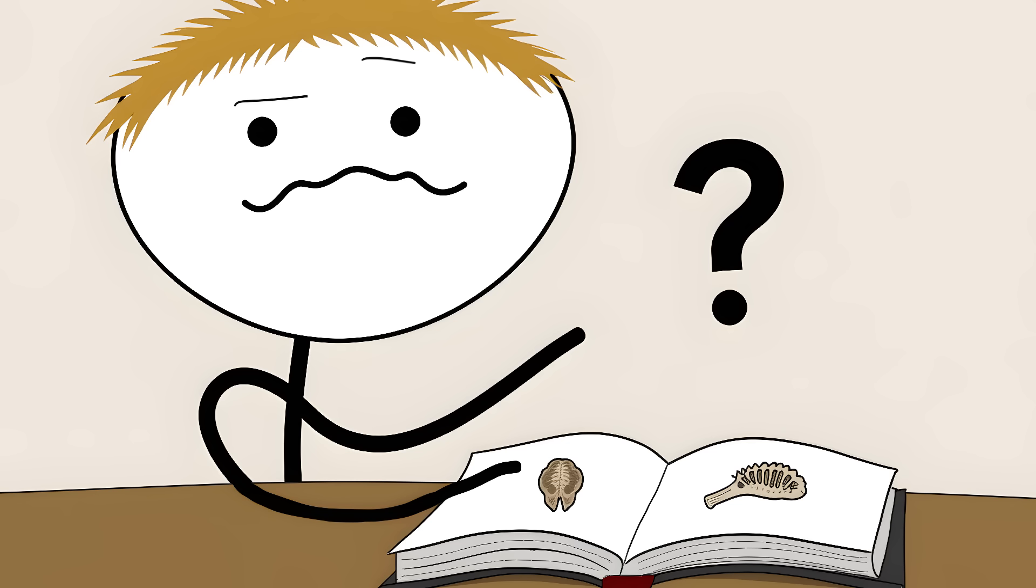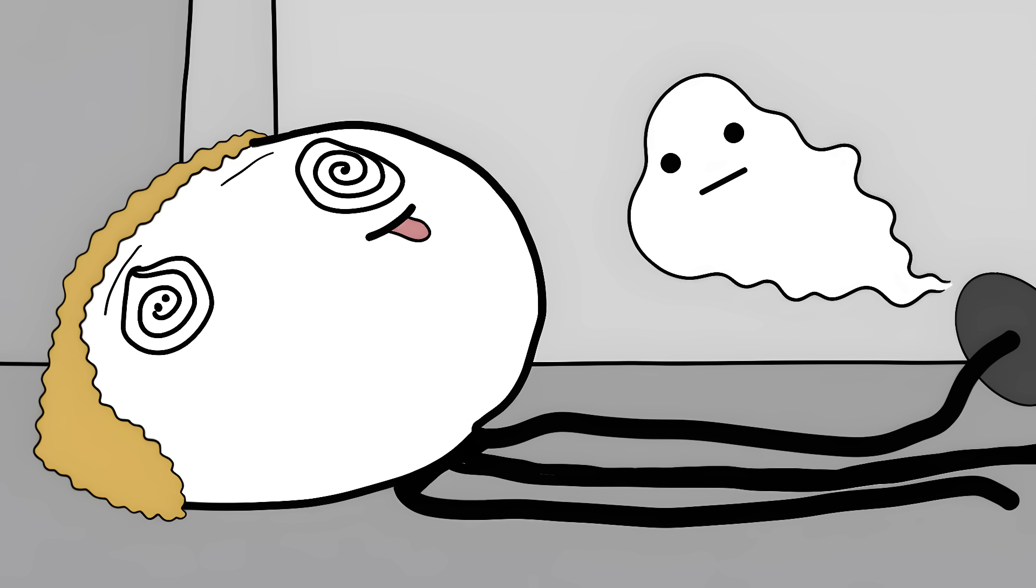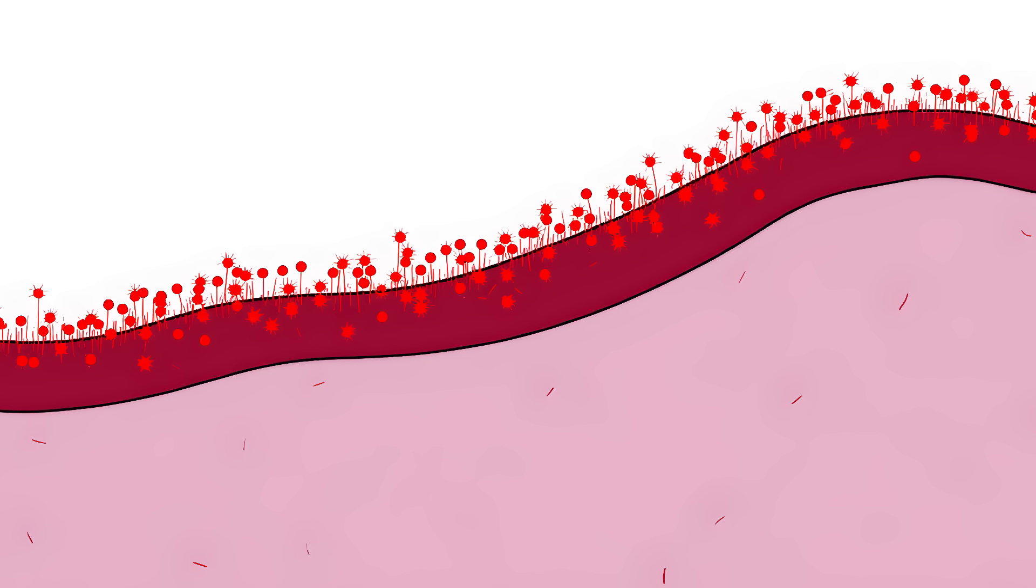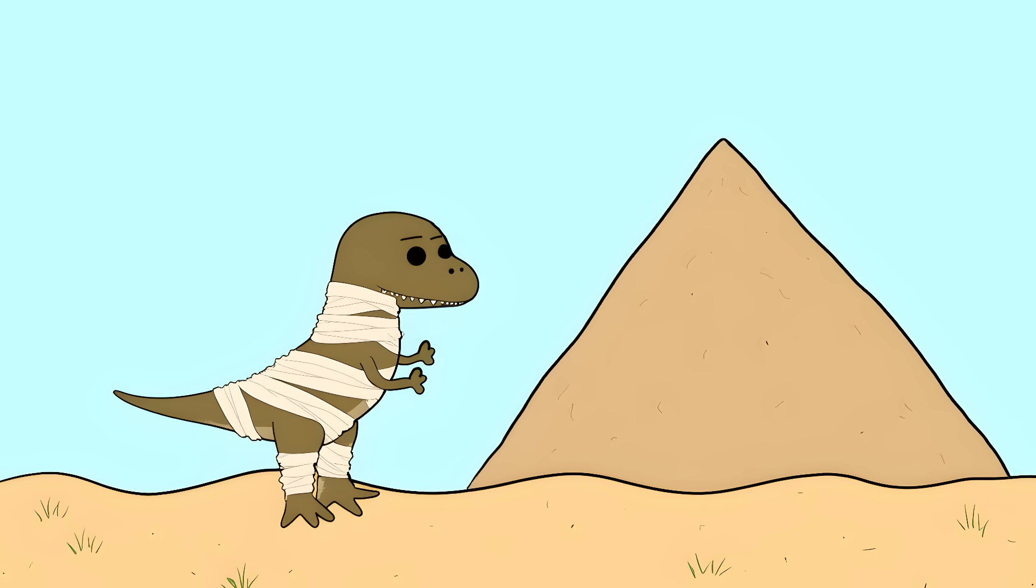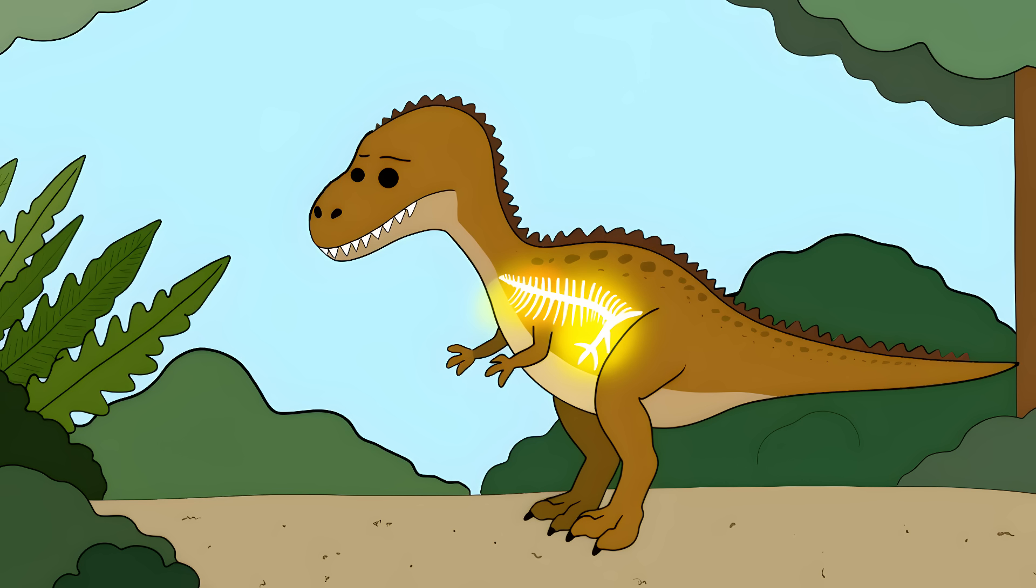This isn't supposed to happen. Soft tissue is supposed to disappear faster than your motivation at the gym. Turns out, the iron in the dinosaur's blood acted like nature's formaldehyde. It basically turned the T. rex into its own Egyptian mummy. The dinosaur accidentally embalmed itself from the inside.